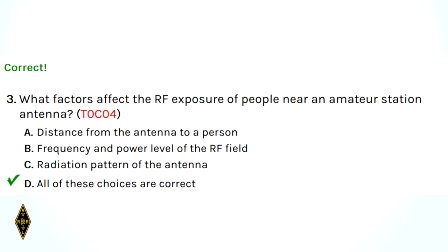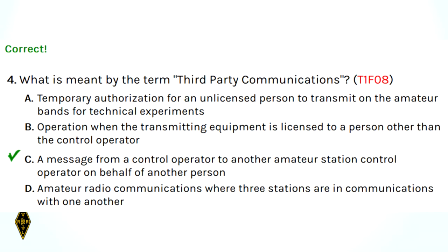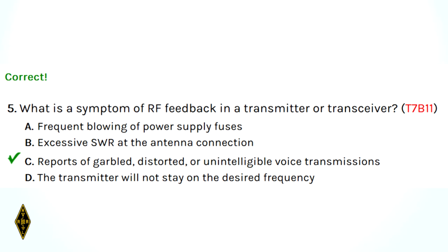Question 3: what factors affect the RF exposure of people near an amateur station? All of these choices are correct — the distance from the antenna, the frequency and power level, and the radiation pattern of the antenna. Question 4: third-party communications means a message from a control operator to another amateur station control operator on behalf of another person, the third party — 4C. Question 5: the symptom of RF feedback in a transmitter or transceiver is reports of garbled, distorted, or unintelligible voice transmissions. It will sound fuzzy and distorted.